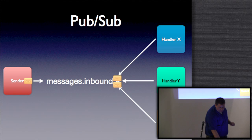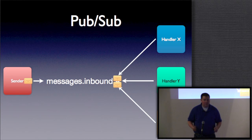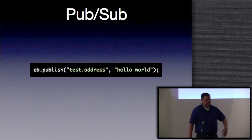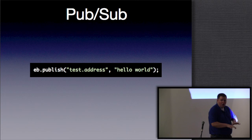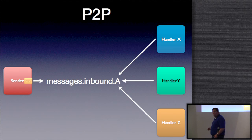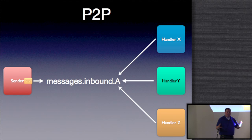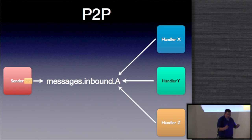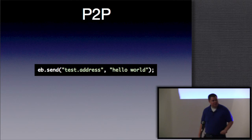Vert.x supports multiple styles of messaging. Pub/sub delivers a single message to all handlers registered at an address — using a `publish` method that takes an address and a message. Point-to-point messaging delivers to at most one handler at an address using non-strict round-robin load balancing. Optionally you can specify a reply handler, and that reply handler can have its own reply handler, enabling two-way communication between message handlers. P2P is done with the `send` method.